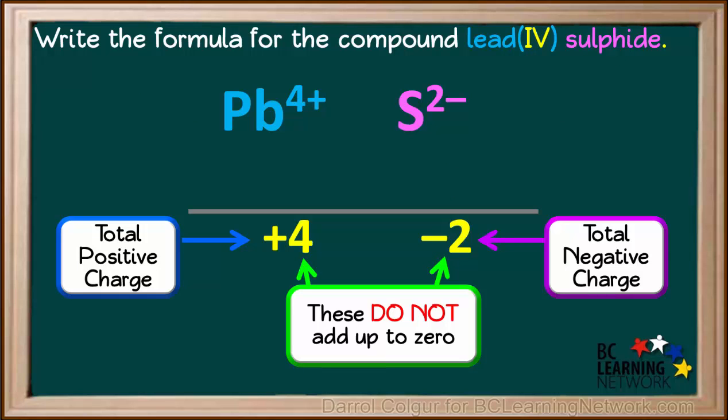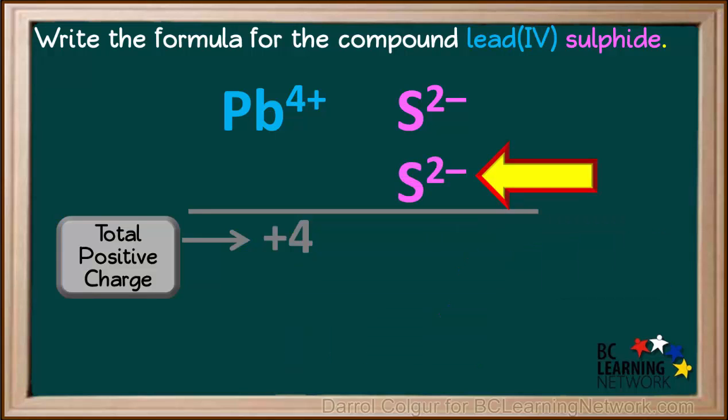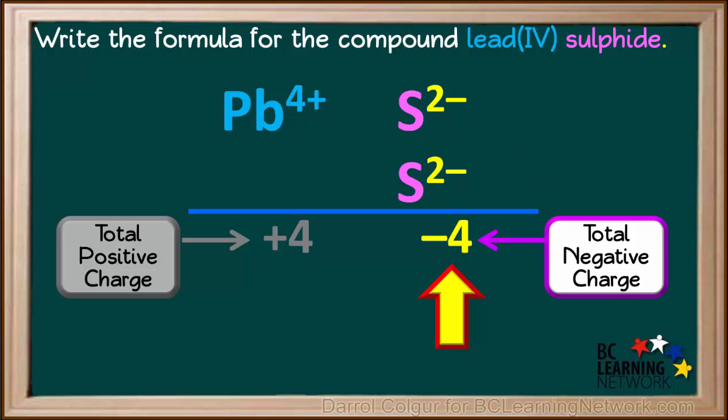With one lead four ion and one sulfide ion, the charges do not add up to zero. To make charges balance, we add another sulfide ion. And now the total negative charge is negative 4.